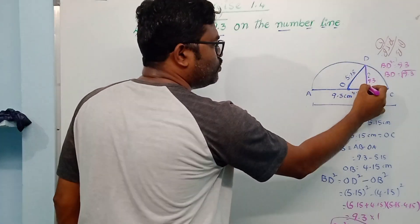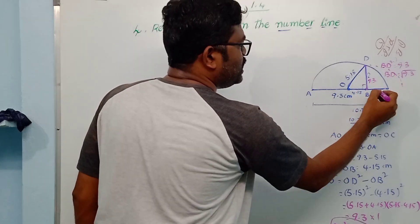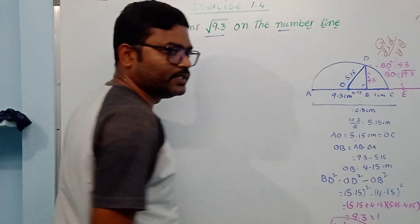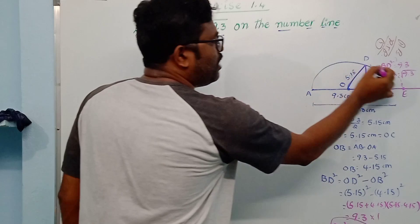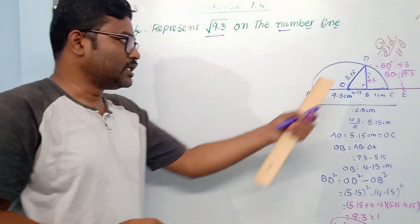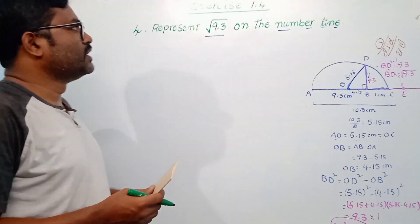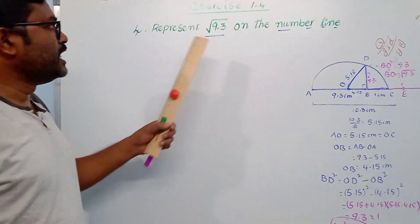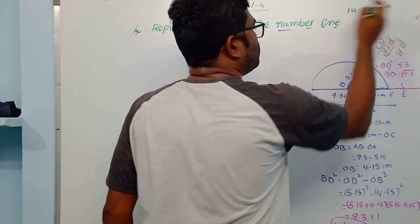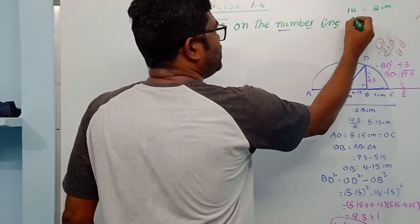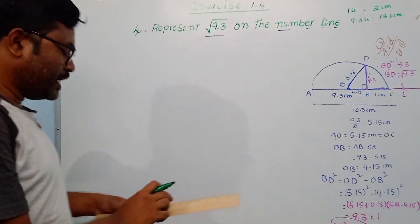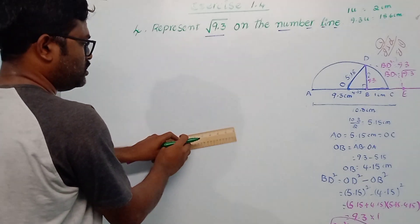Now we are going to represent the square root of 9.3 on the number line. We use a scale where 1 unit equals 2 centimeters. Therefore 9.3 units is 18.6 centimeters. So the line segment of 18.6 centimeters represents 9.3 units on the number line.